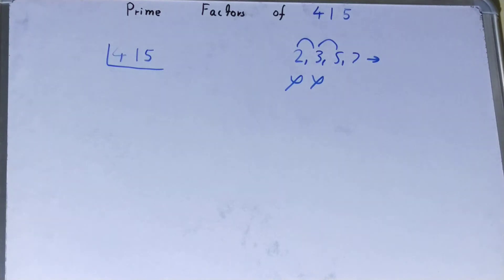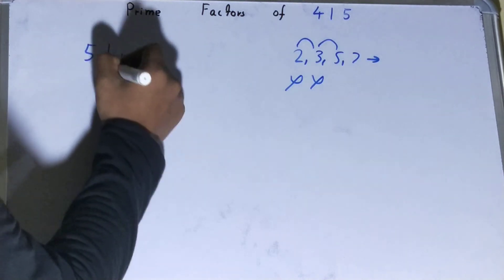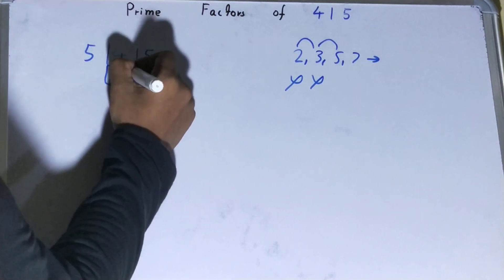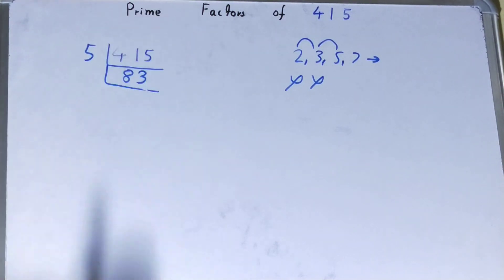That is 5. The last digit is 5, so yes it is divisible by 5. So divide it: 5 times 83 is 415. Now this 83 is further not divisible by 5, and it is a prime number, so it's also not divisible by any other prime number.